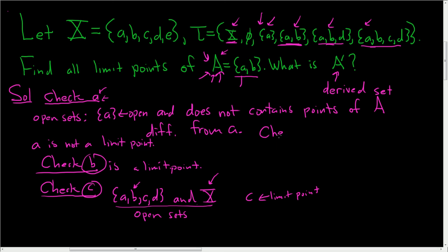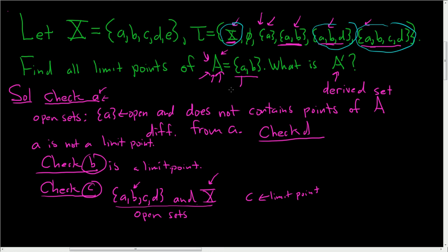Let's check little d. We look at all of the open sets containing little d — there are three of them. The question is: do they contain points of A different from little d? And they do — each one contains little a, which is in A. So little d is a limit point.